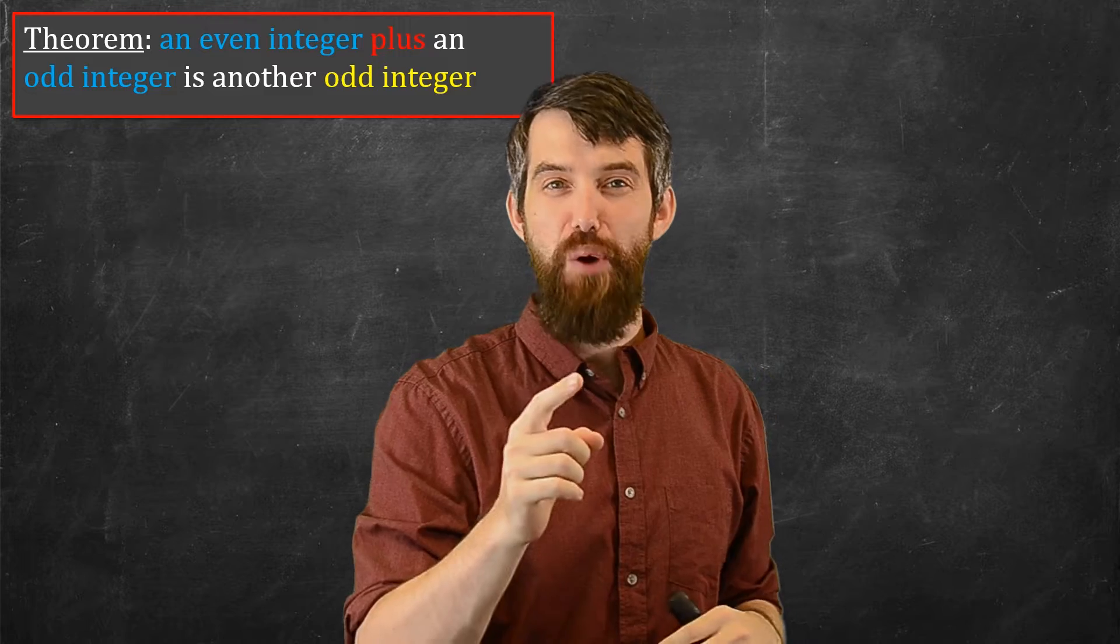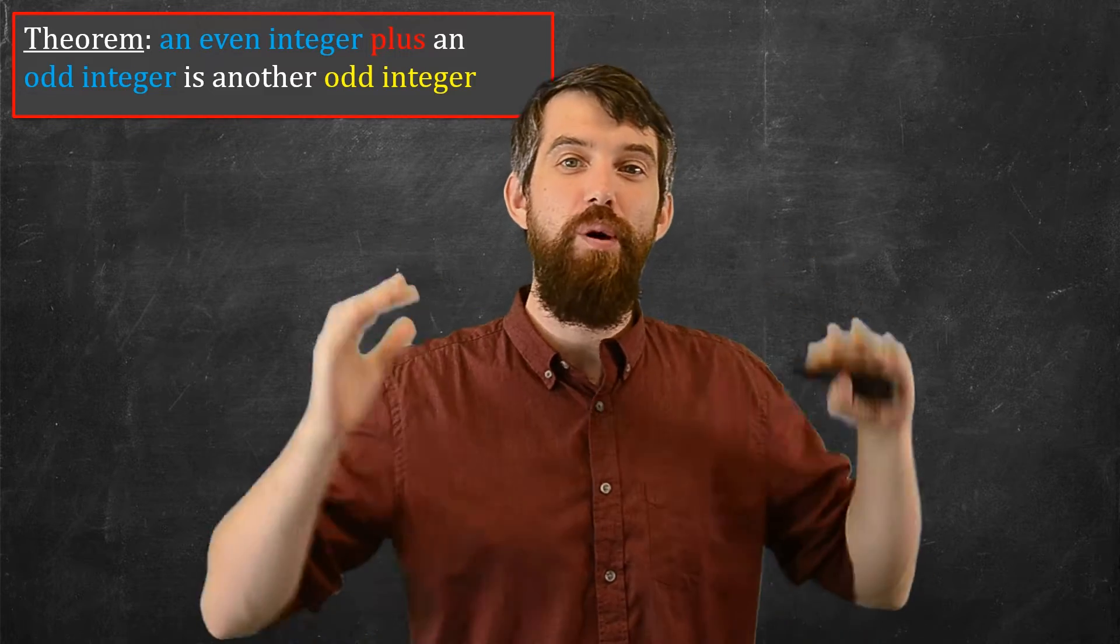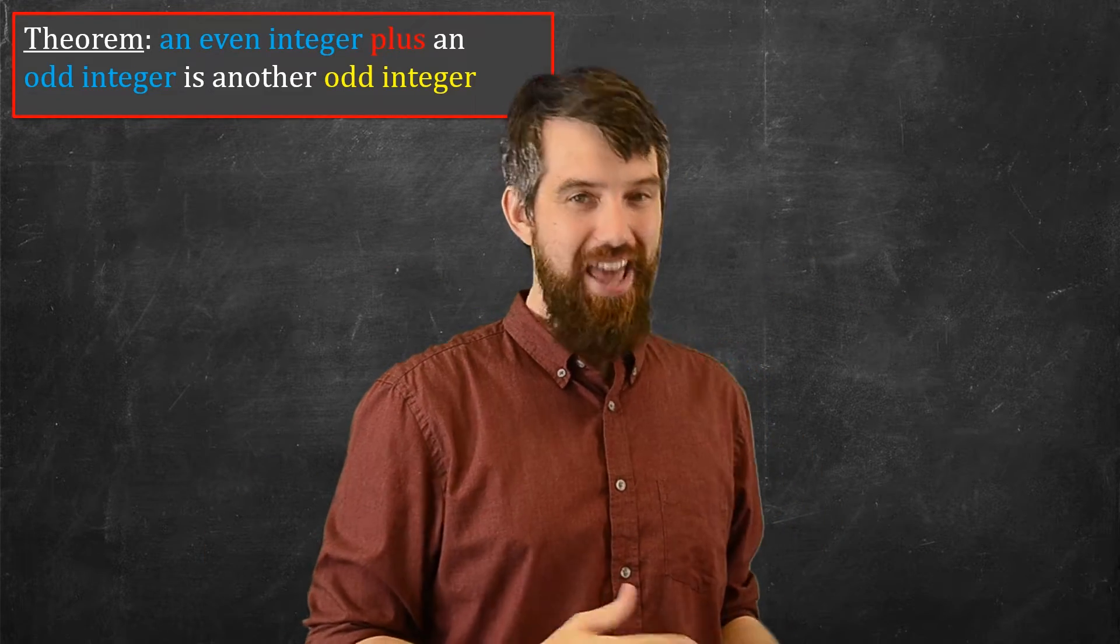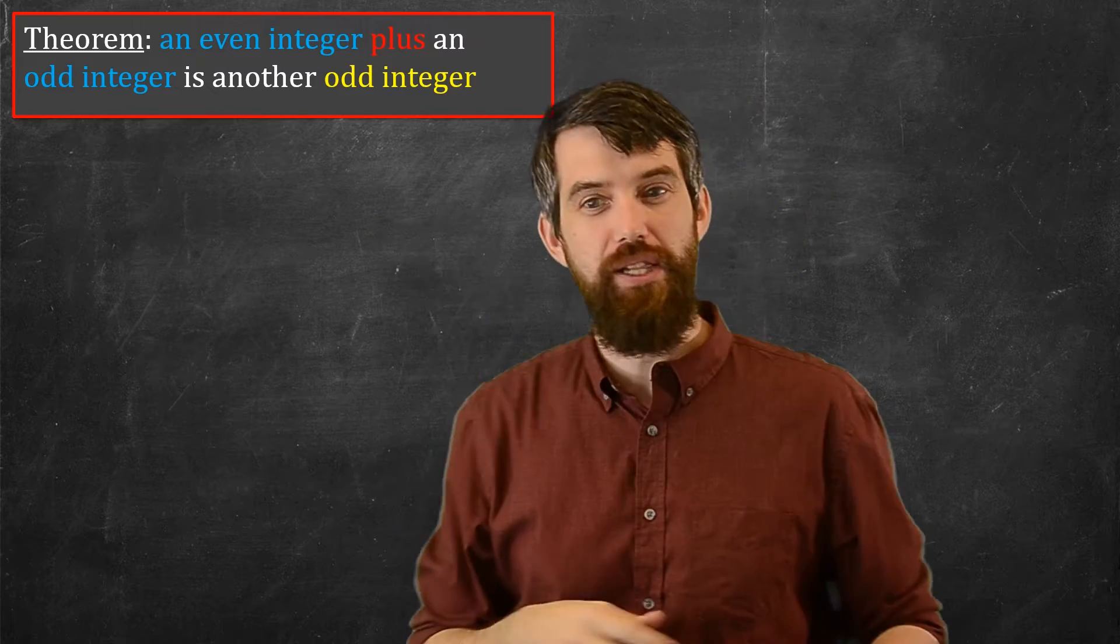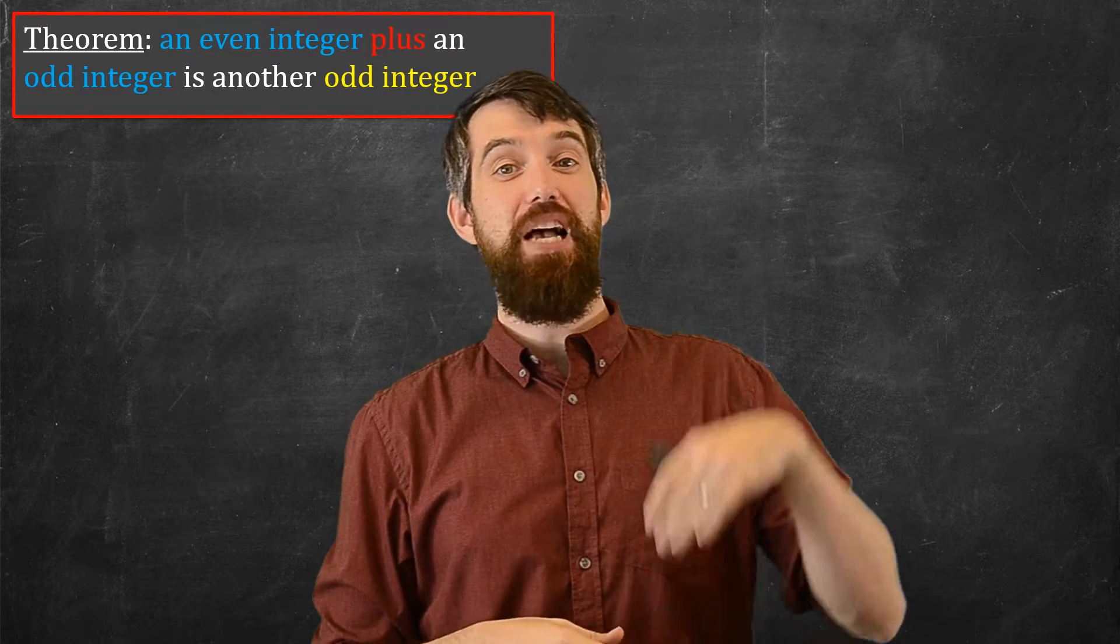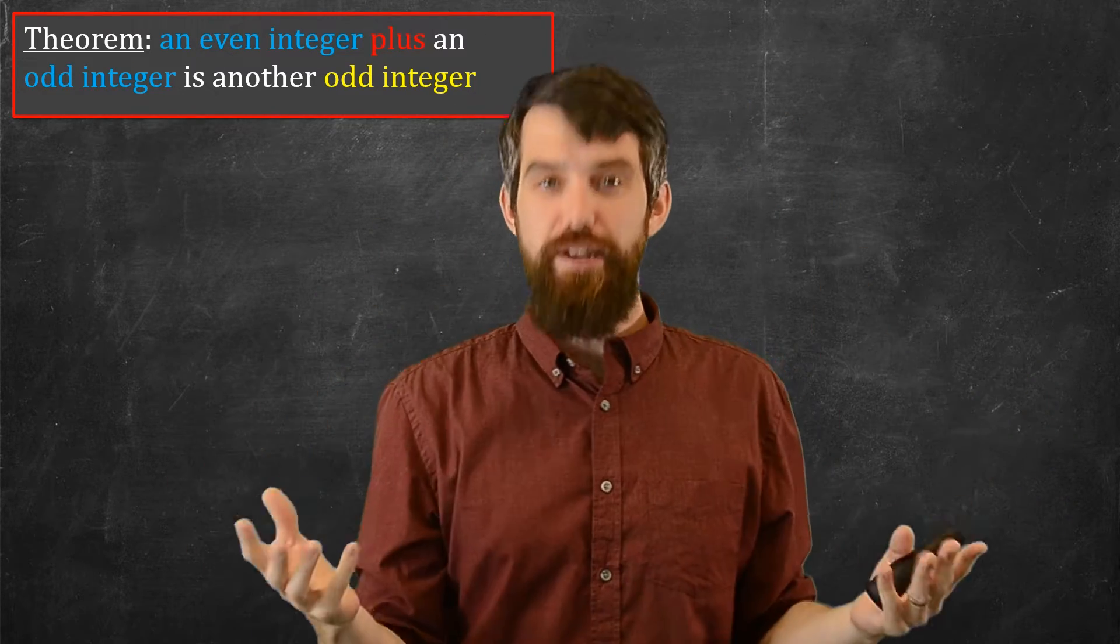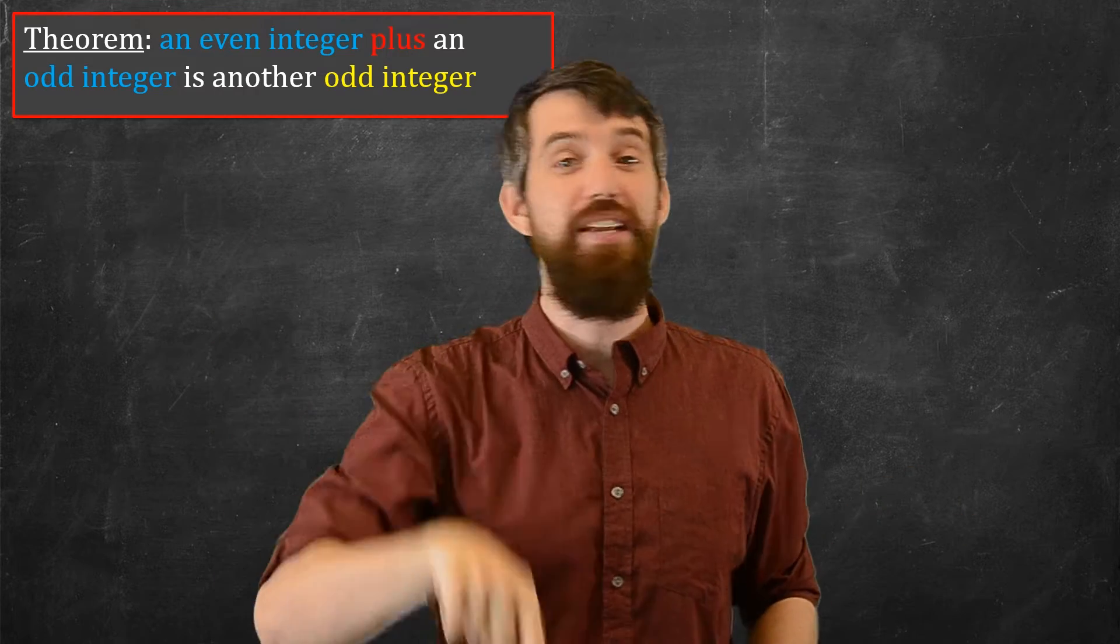I'm excited because in this video we are going to do our first formal mathematical proof. I have a kind of straightforward claim. The claim is that the sum of an even and an odd integer is in fact an odd integer.